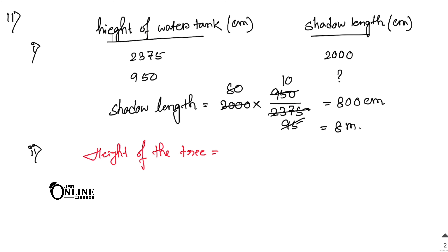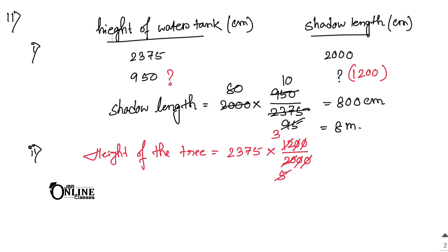For the second part of sum 11: find the height of the tree if the length of its shadow is 12 meters (1200 centimeters). Height of the tree equals 2375 multiplied by 1200 divided by 2000. Canceling zeros, and dividing 2375 by 5 gives 475. Then 475 multiplied by 3 equals 1425. So 1425 centimeters, which means 14 meters 25 centimeters, is the answer.